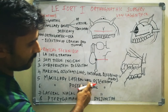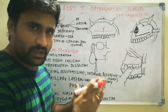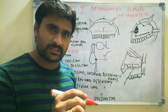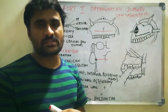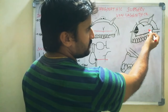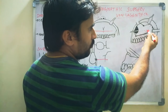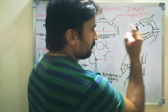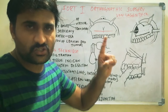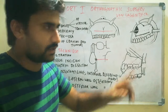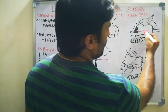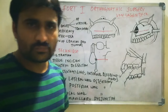The fifth step is maxillary lateral wall osteotomy. The osteotomy cut starts with a rotating saw, or you can use 702 or 703 surgical burs with saline irrigation. Start posteriorly at approximately the zygomaticomaxillary buttress and move anteriorly. This completes the osteotomy line in the lateral wall of the maxilla.